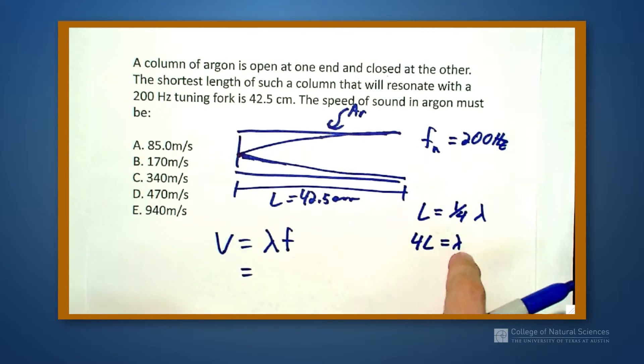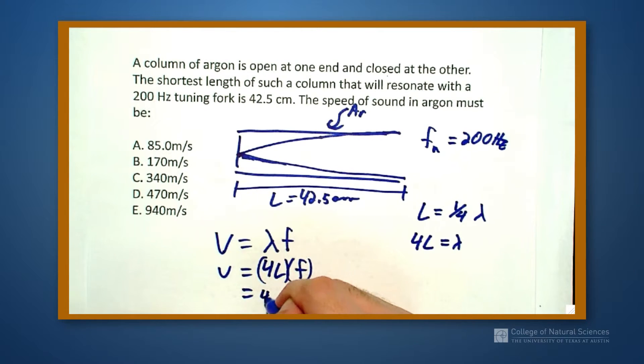So that means I just substitute in. I get 4L times the frequency is equal to my velocity, which when I plug in the numbers is 4 times 42.5 centimeters times 200 hertz.